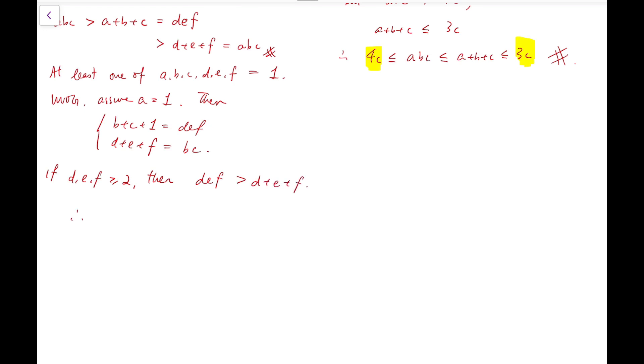And so that means b plus c plus one is strictly greater than bc. And I'm going to move b plus c plus one to the right-hand side, and add some numbers on both sides to make one side factorizable.